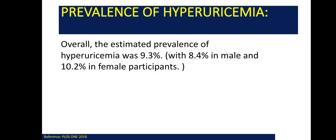Starting with the prevalence of hyperuricemia. Overall, the estimated prevalence of hyperuricemia was 9.3%, with 8.4% in male and 10.2% in female participants.